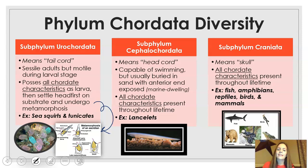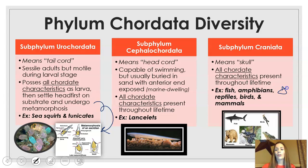Last up, we have subphylum Craniata. As you can imagine, cranium means skull — so these are all chordates that have a skull and have all those characteristics present throughout their lifetime. This leads us into future units where we'll break down all the different chordates in subphylum Craniata. And that is all for your notes.